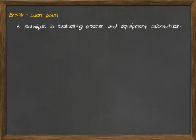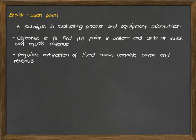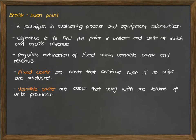Now just to review, break-even point is a technique in evaluating process and equipment alternatives. Its objective is to find the point in dollars and units at which cost equals revenue, and this requires estimation of fixed costs, variable costs, and revenue. Fixed costs are costs that continue even if no units are produced, and variable costs are costs that vary with the volume of units produced.